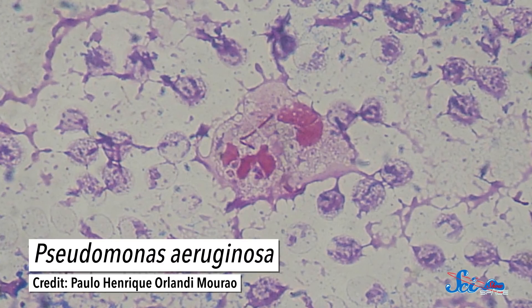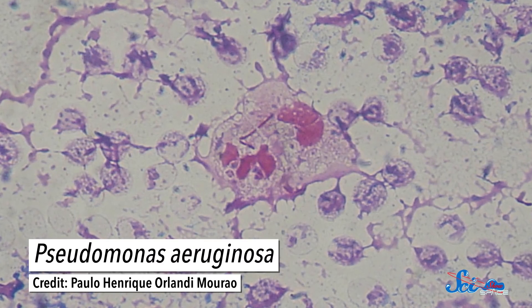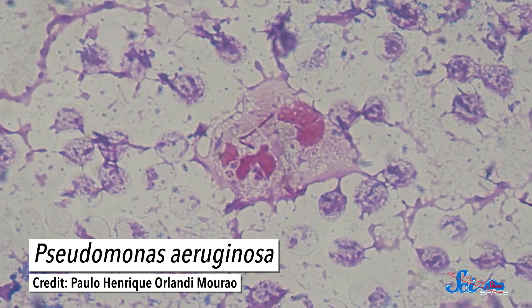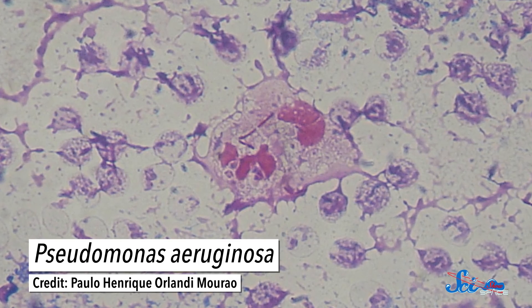Now, P. aerogenosa can cause pretty nasty infections, depending on how healthy your immune system is. So astronauts probably don't want to culture it up in space. And while eutropha isn't pathogenic, it's still not the lab microbe of choice. That is E. coli.